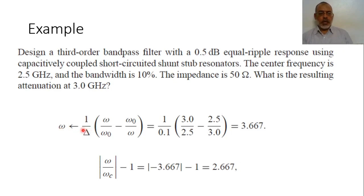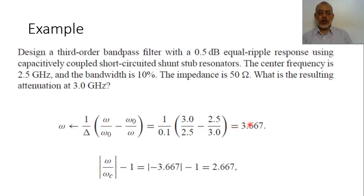Delta here is the bandwidth, which is 0.1, and omega_0 is 2.5 GHz. To determine the attenuation at omega equals 3 GHz, we compute: (3 over 2.5 minus 2.5 over 3) multiplied by 1 over 0.1, to obtain the corresponding omega of the lowpass filter prototype.